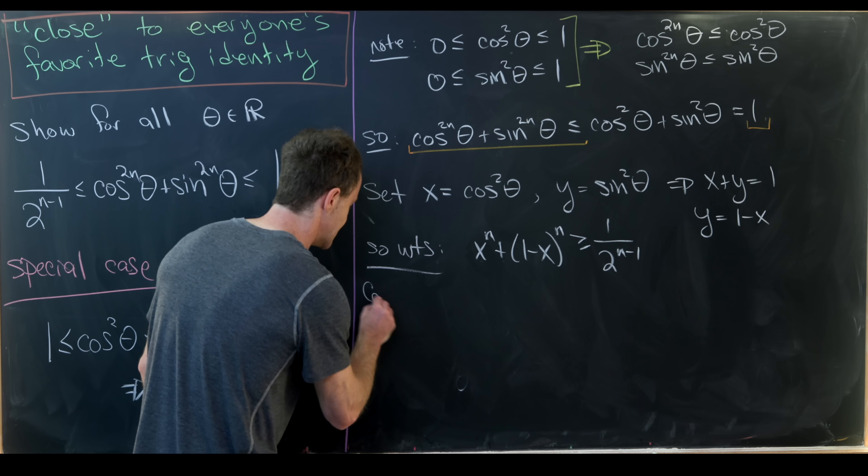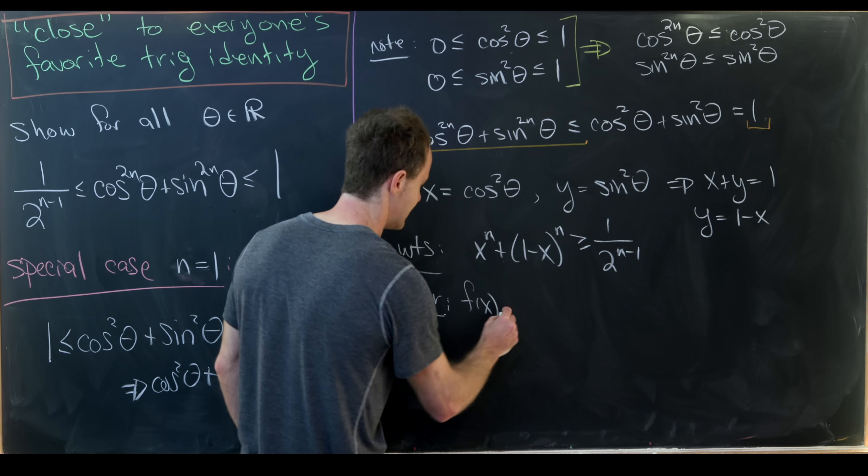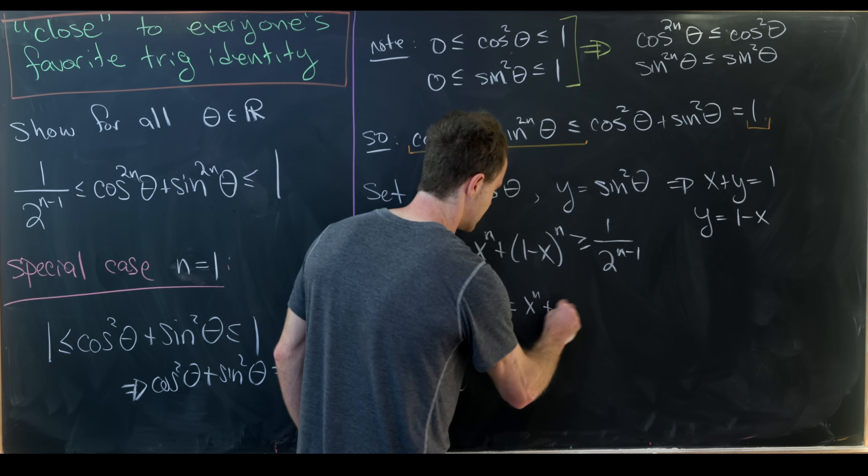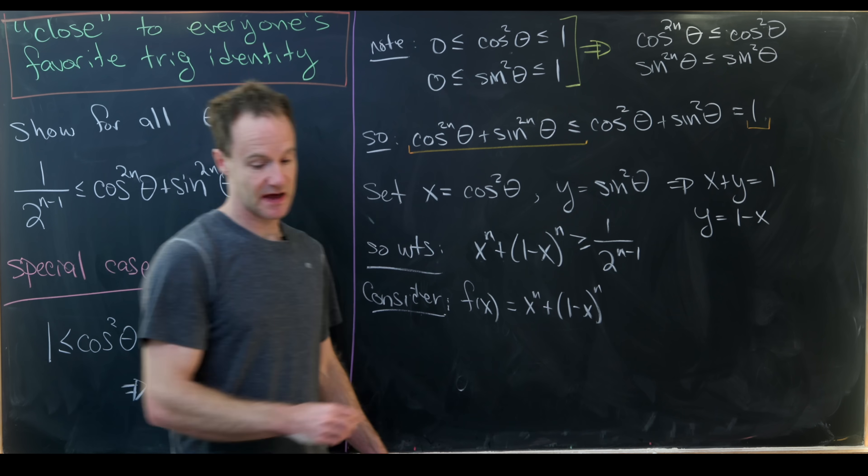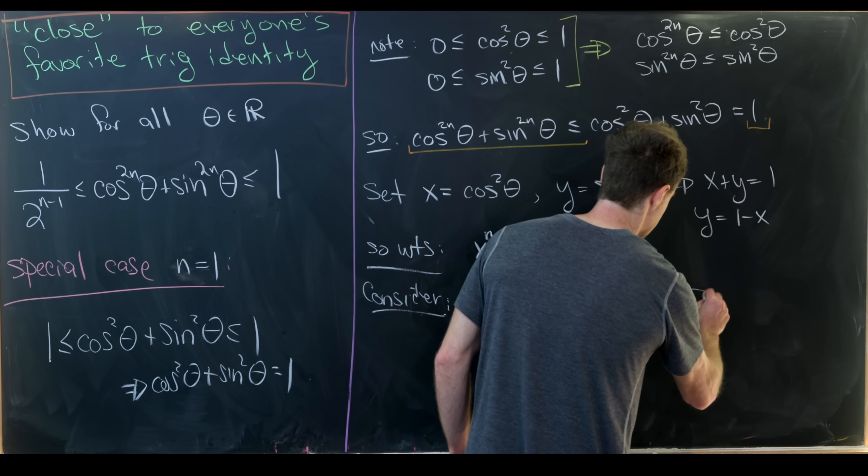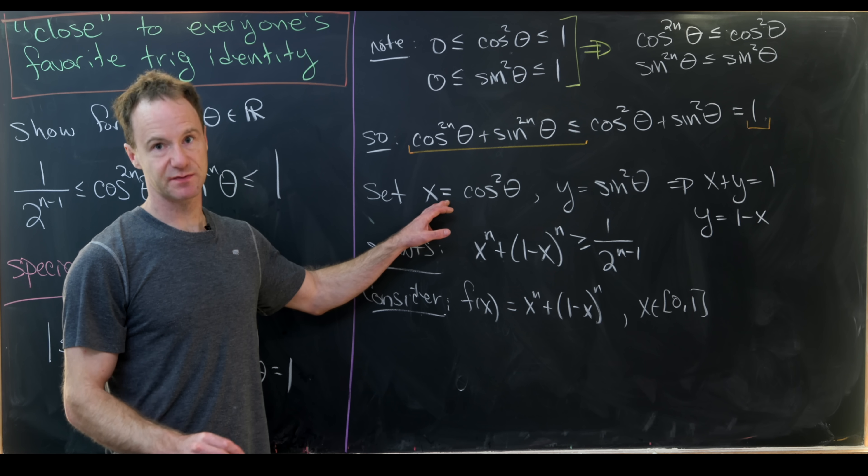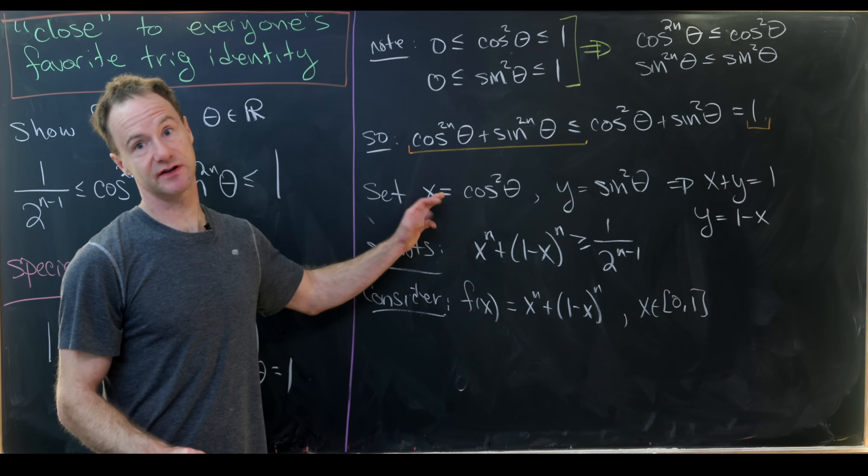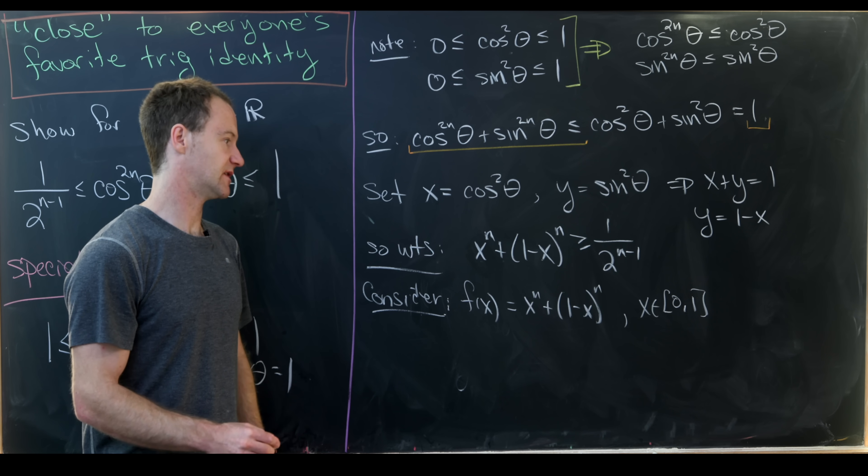So in order to do that, we will consider a function, and we'll consider the function defined by this expression. So I'll call it f of x, which is x to the n plus 1 minus x to the n power. And this is going to be on the interval from 0 to 1. And that's because the smallest value x could take here is 0, and the largest value is 1, just given that x is cosine theta.